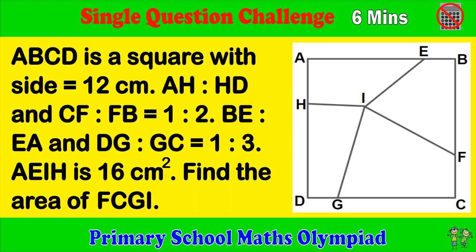AEIH is 16 cm square. Find the area of FCGI.